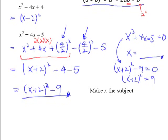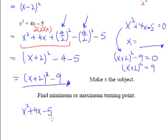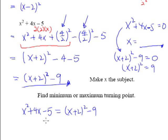Secondly, completing the square helps us find the maximum or minimum turning point of a quadratic equation. Let's use the same example: x squared plus 4x minus 5. We know it can be written as (x + 2)² minus 9 — they are exactly equal. The only difference is that one is in completed-square form and the other is in expanded form; when you expand the bracket you end up with the same expression.